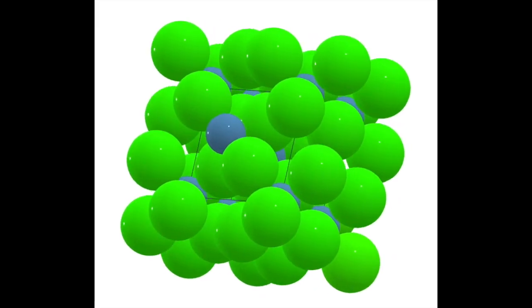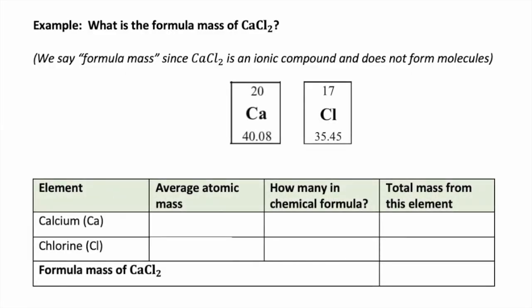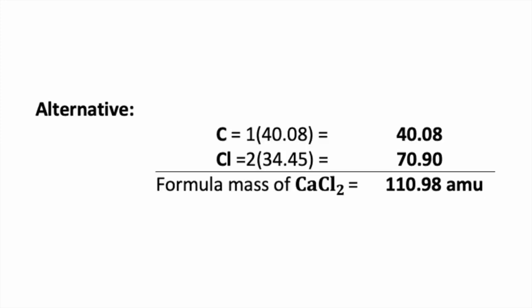Its actual structure looks more like this. Let's make another table. The average atomic mass of calcium is 40.08 atomic mass units. We have one calcium in our chemical formula, so the total mass contributed by calcium is 40.08 AMU. For chlorine, the average atomic mass is 35.45 AMU. We have two chlorine atoms, so we multiply by two and get 70.90 AMU. Adding both elements together, the total formula mass of calcium chloride is 110.98 atomic mass units.